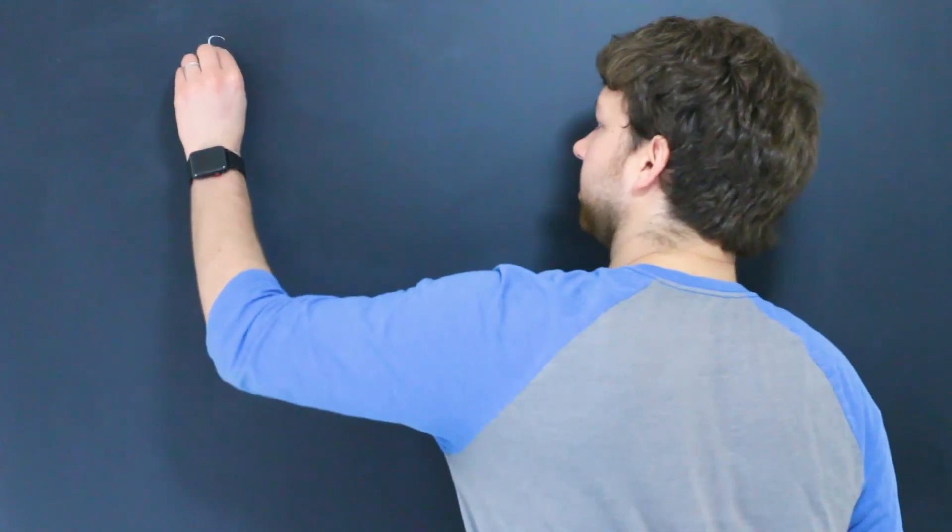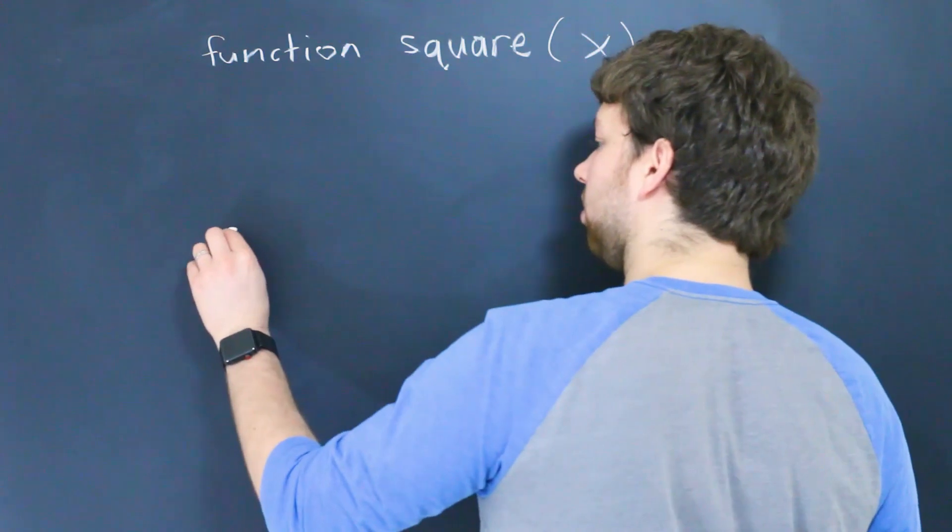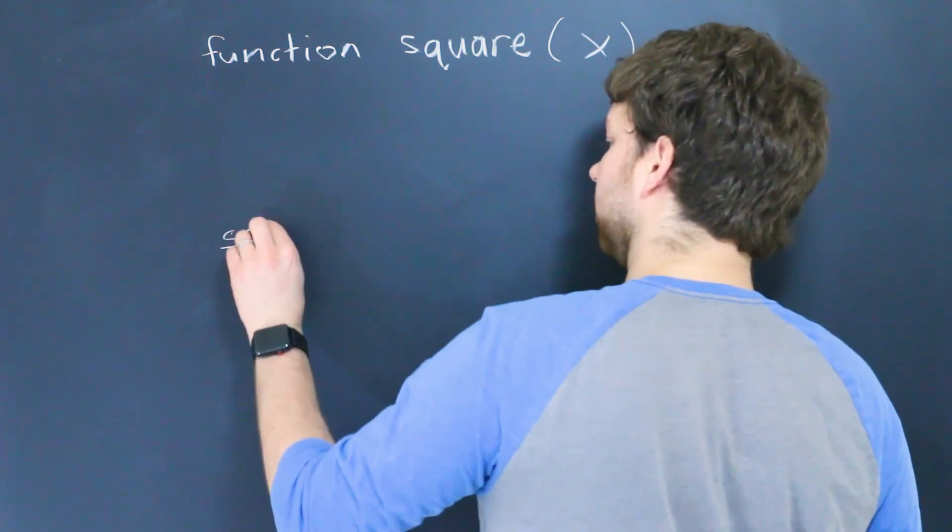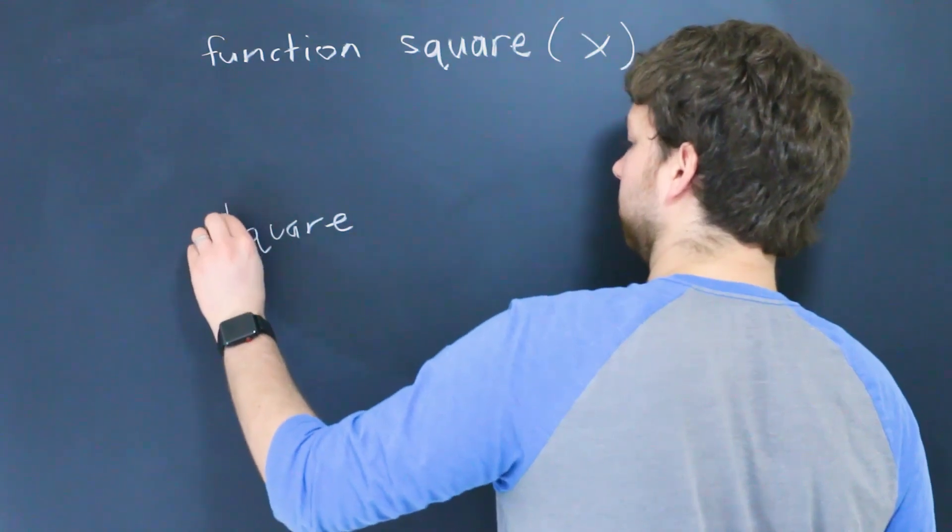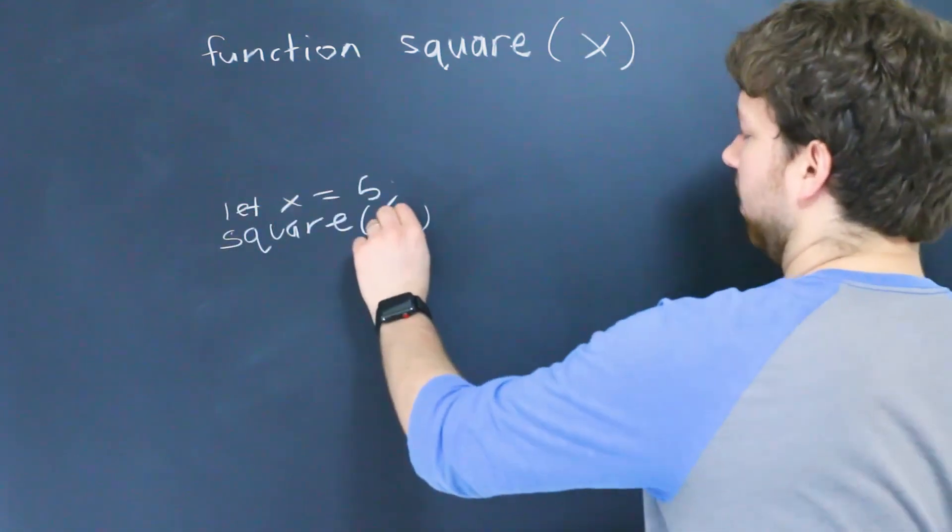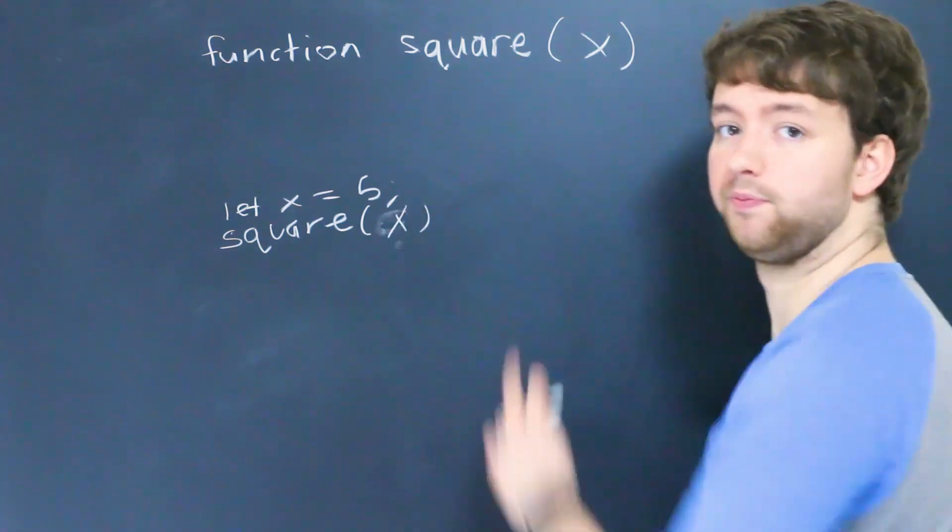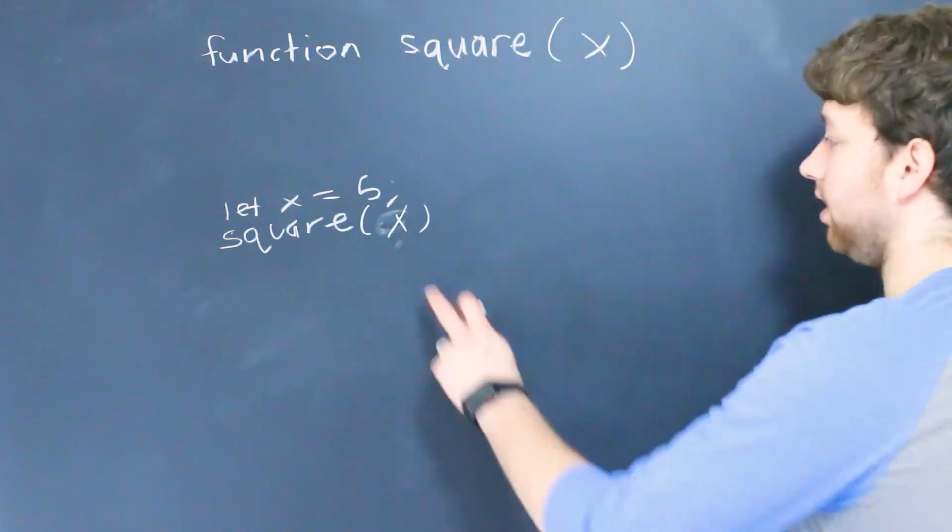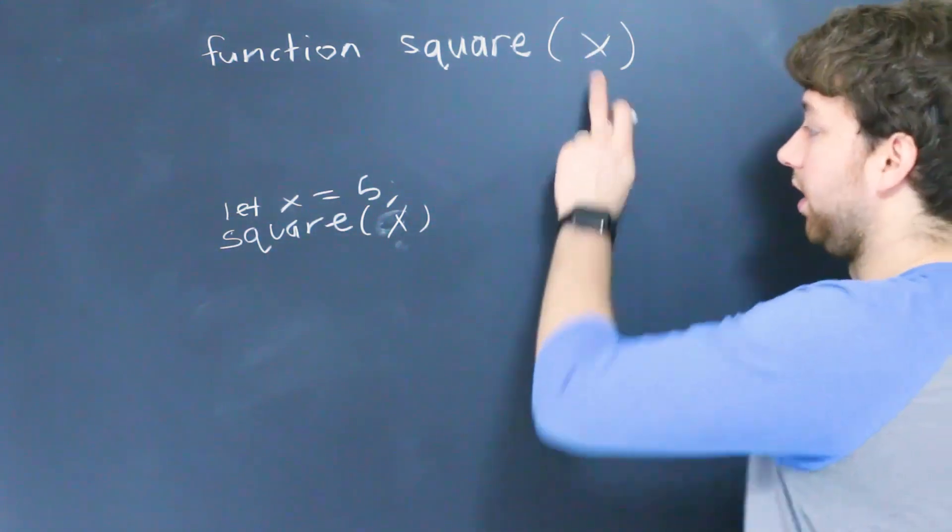So I think we had something like this where we had a parameter here and then we had the function body and then we called the function or invoked it and passed in some value or some variable. Let's say we're passing in a variable so we declare a variable X and then we pass it into the square function like so.